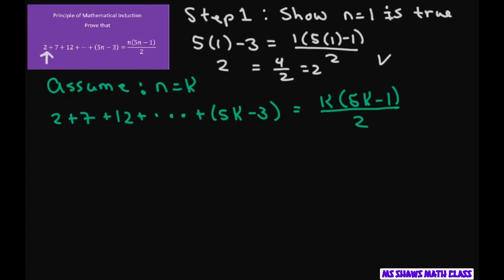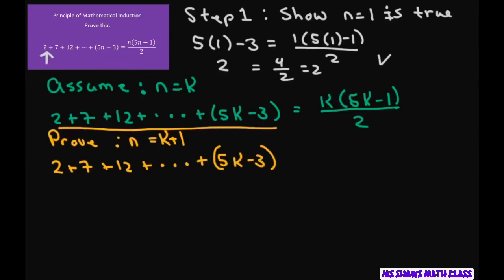All right, now the last step is to prove it. So we have to prove that it works for all next terms, so for n equals k plus 1. So what I'm going to do is I'm going to copy this part down: 2 plus 7 plus 12 plus dot dot dot plus 5k minus 3. And the next term would be 5k plus 2.